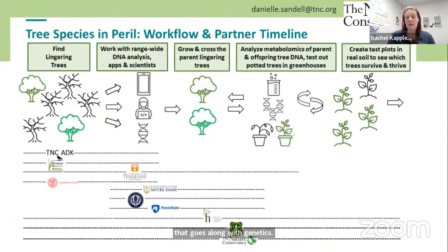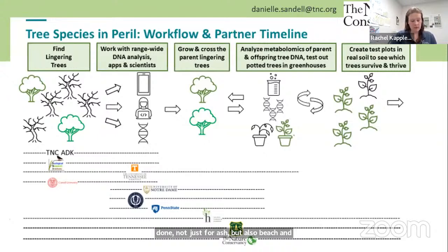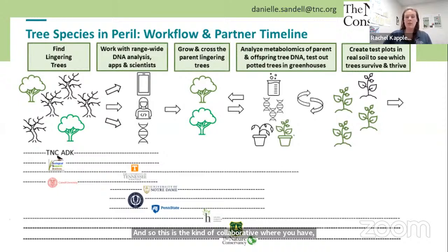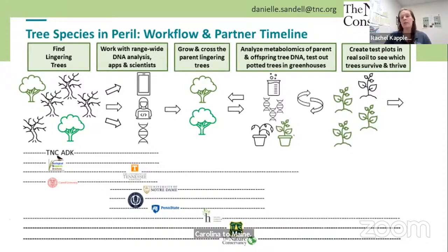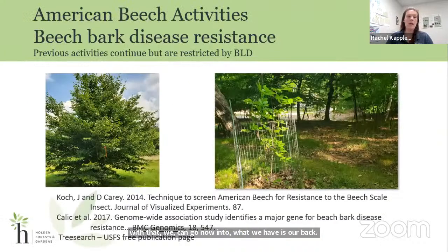The Nature Conservancy partnership is helping get more work done not just for ash but also beech and hemlock. It's a collaborative where I cover the Great Lakes region area and TNC helps from roughly North Carolina to Maine. With that, we can move into our basic information on where we are with beech and hemlock.